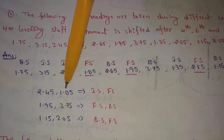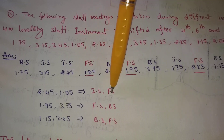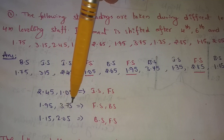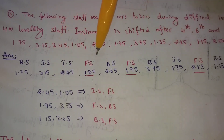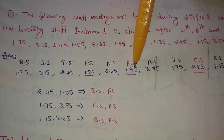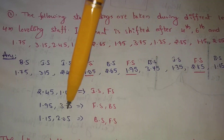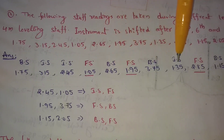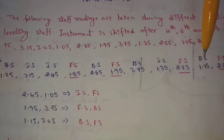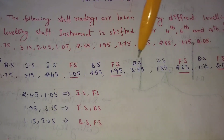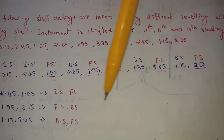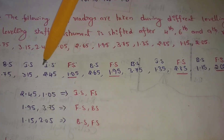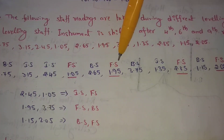Otherwise 1.05 is four-site. The intermediate site is four-site. Foresight is 1.95, and 3.75 is backsite, 1.15 is backsite. And 2.05 is four-site, so the other side locations are identified.